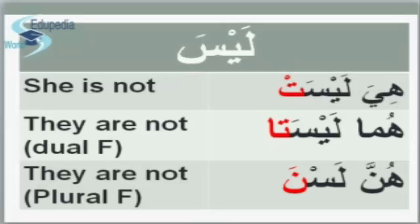She or she is: هِيَ. She is not: هِيَ لَيْسَتْ. You start with لَيْسَ the same thing, and then you add a silent تْ at the end, so it becomes لَيْسَتْ. هِيَ لَيْسَتْ means she is not. They are not — dual feminine. 'They are' is هُمَا, and they are not is هُمَا لَيْسَتَا. لَيْسَتَا means they are not dual feminine — you start with لَيْسَ then add تَا at the end.